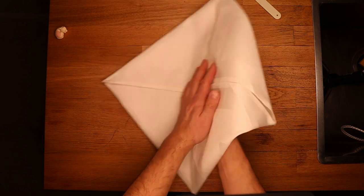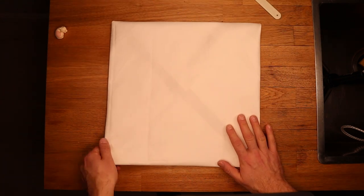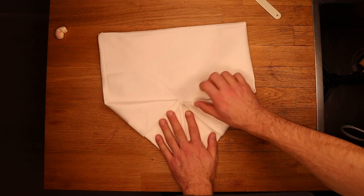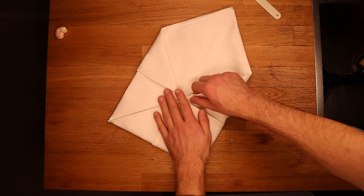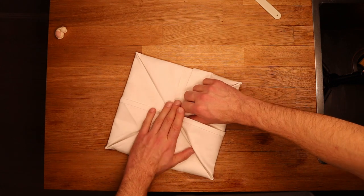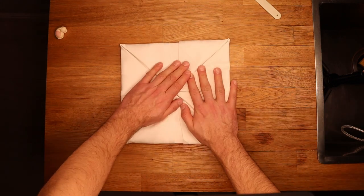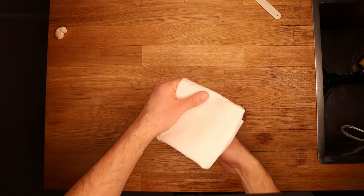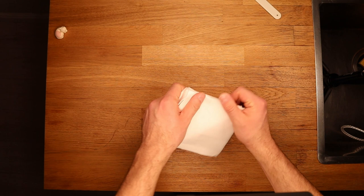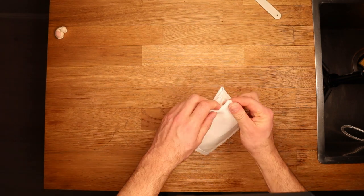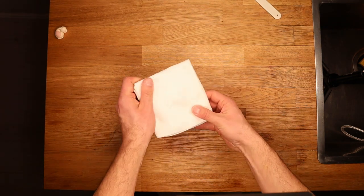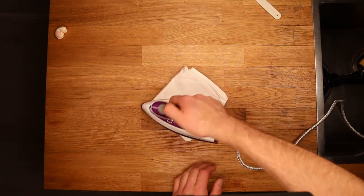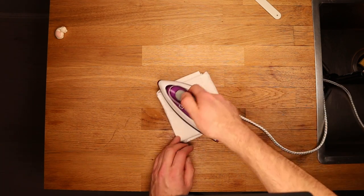Now you fold this square around. There we go. And again, you will fold all the edges, or all the corners, to the middle. Now you fold the napkin into four, as you see here, so you have a small square. Use your fingers to adjust everything. There we go. And then iron it. Give it a quick iron, so it stays shaped later on.